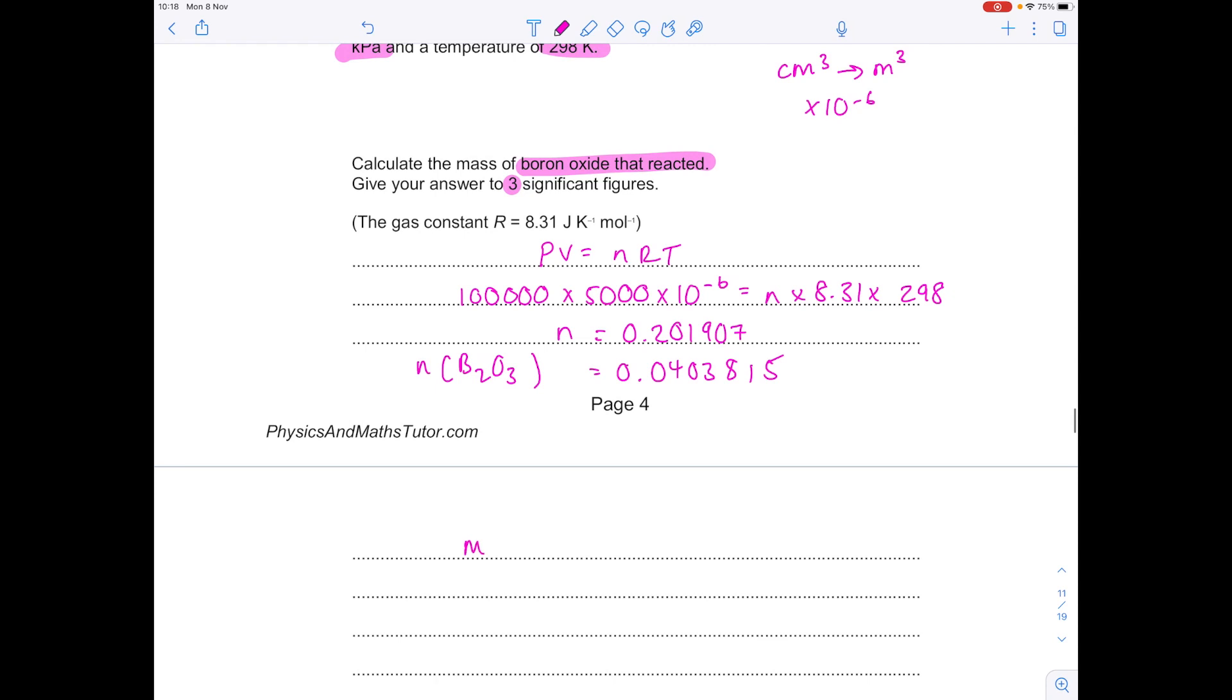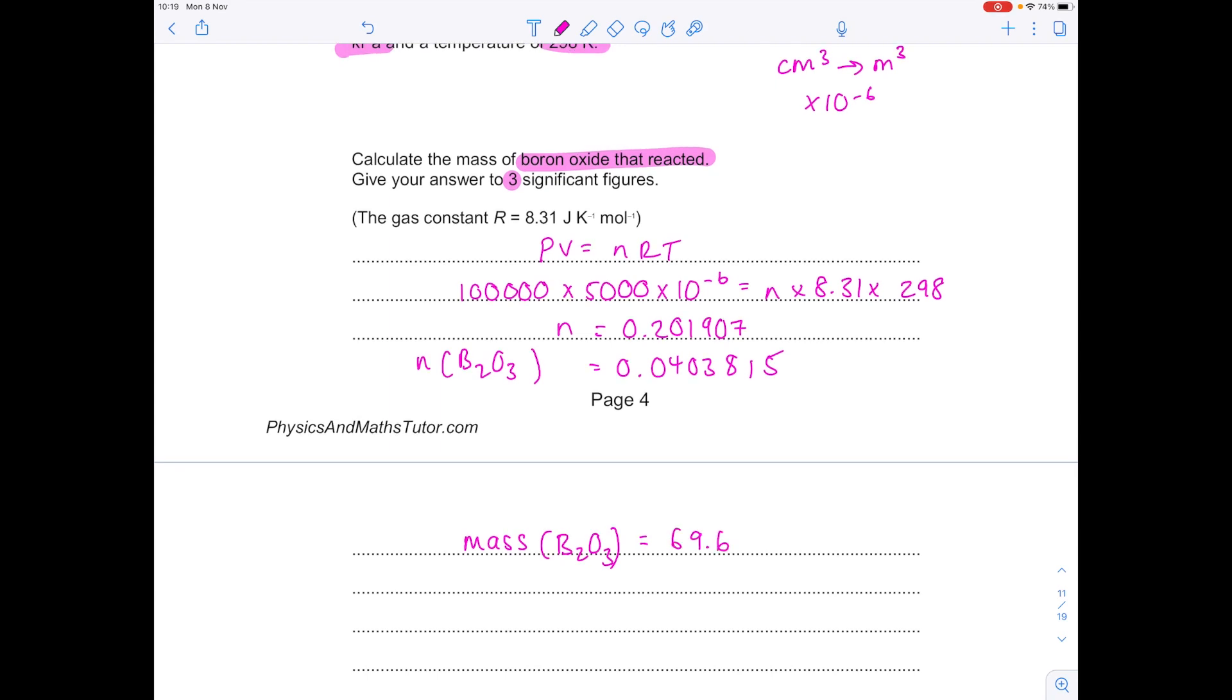Then it's just a matter of finding the MR of boron oxide using your periodic table, which is 69.6. Multiply by that number of moles we've just calculated, get a value of 2.81, and remember they wanted that to three significant figures.